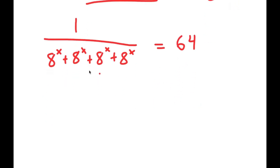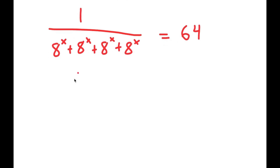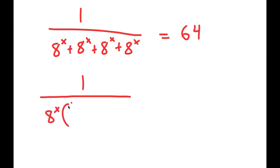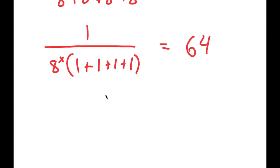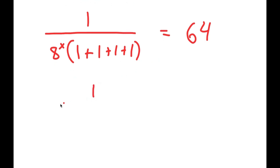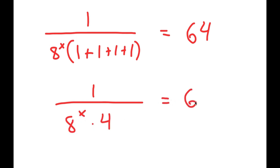Now from here, notice how I have 4 of the same terms for my denominator, meaning I can factor out that one term. So I get 1 over 8^x times — well, 8^x divided by 8^x is 1 — so I get 1 plus 1 plus 1 plus 1, which gives me 1 over 8^x times 4 is equal to 64.